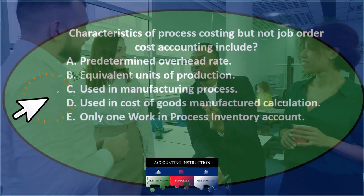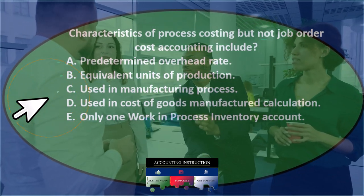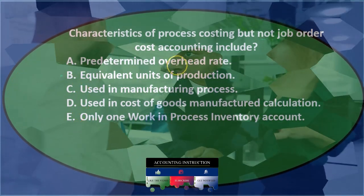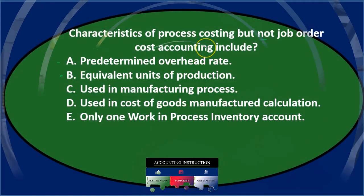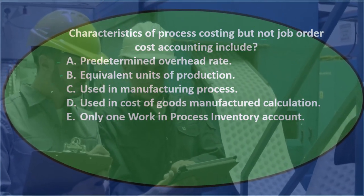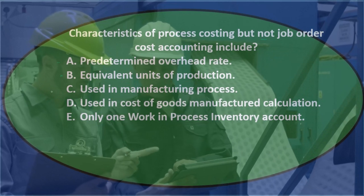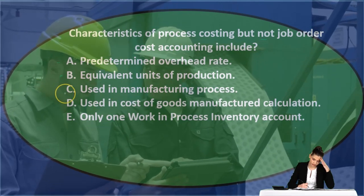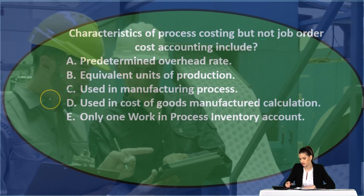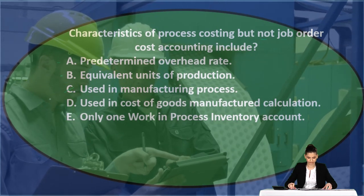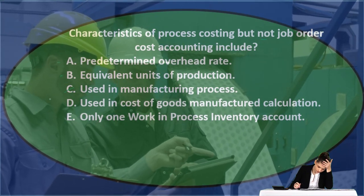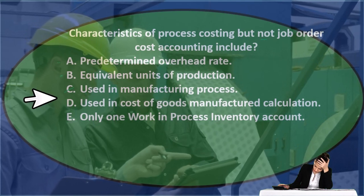Option C, used in manufacturing process — both the job cost system and the process cost system are used in the manufacturing process. It's not one or the other; you can use either system depending on the type of thing being manufactured. So I'm going to say it's not C.